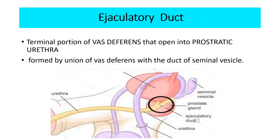Each ejaculatory duct is a cylindrical tube that arises by the union of the ductus deferens with the duct of the seminal vesicles. The ejaculatory ducts open as a minute slit-like opening into the prostatic urethra.